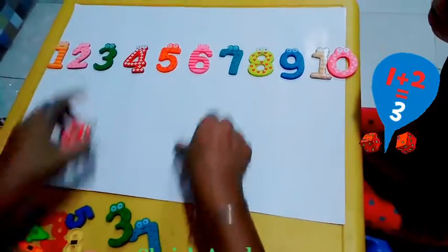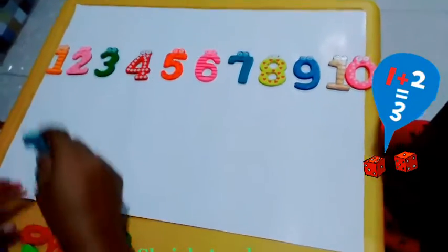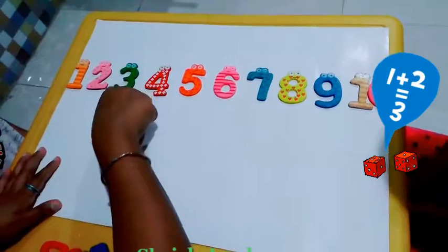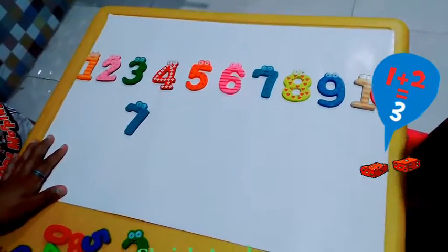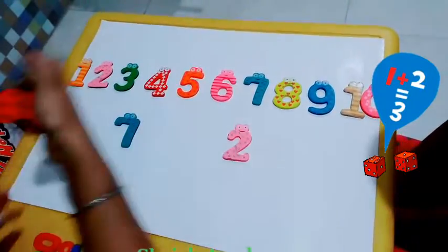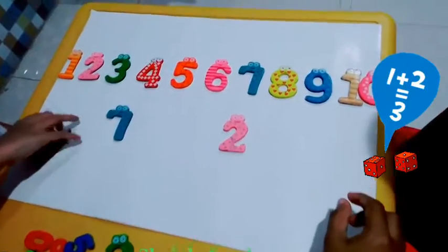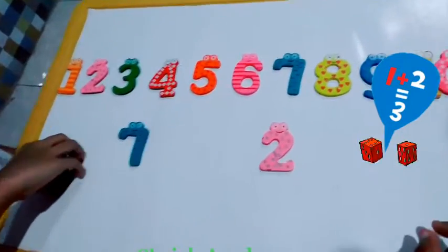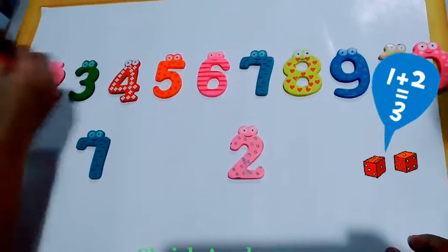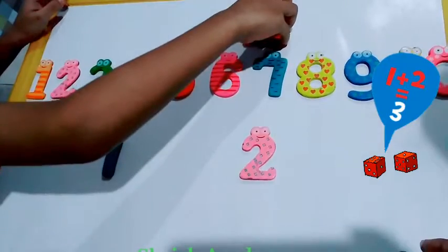Now who will answer me? Ayush. If the bug is standing on 7 and I told him to jump till 2, come on. The bug is standing on 7.